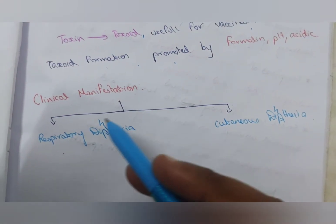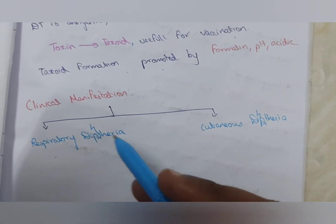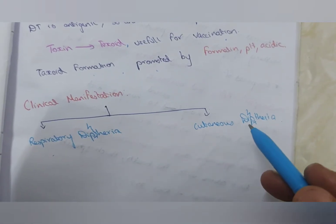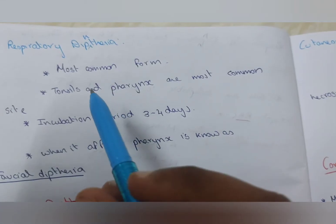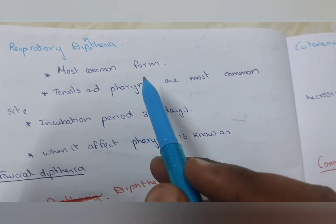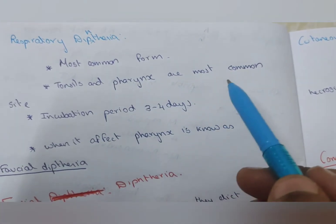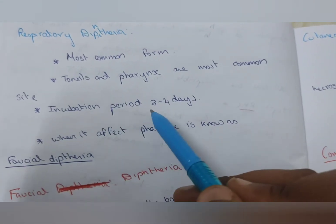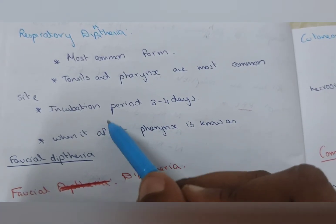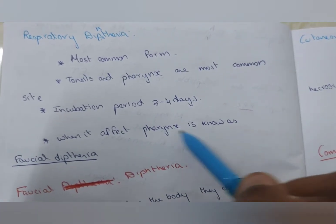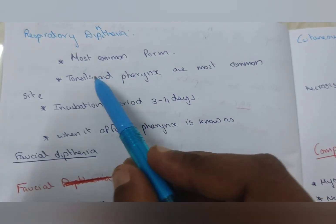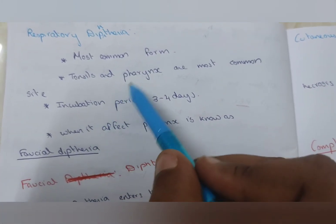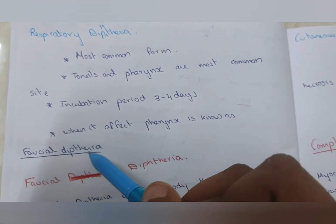Clinical manifestation. There are two types of diphtheria according to the clinical manifestation: respiratory diphtheria and cutaneous diphtheria. Respiratory diphtheria is the most common form. Tonsils and pharynx are the most common site for the affection. Incubation is three to four days. When it is affected, mostly it affects pharynx and tonsils. When the pharynx is affected, it is known as faucial diphtheria.